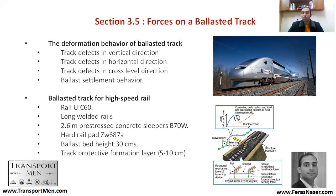Track defects can occur due to forces in vertical, horizontal, and cross-level directions, and there is also the ballast settlement behavior itself. For a standard high-speed rail track: you would use UIC 60 rails welded into continuous welded rail, long rail sections with 2.6-meter pre-stressed concrete sleepers, hard rail ballast bed up to 30 centimeters in height, and a track protective formation layer of 5 to 10 centimeters.